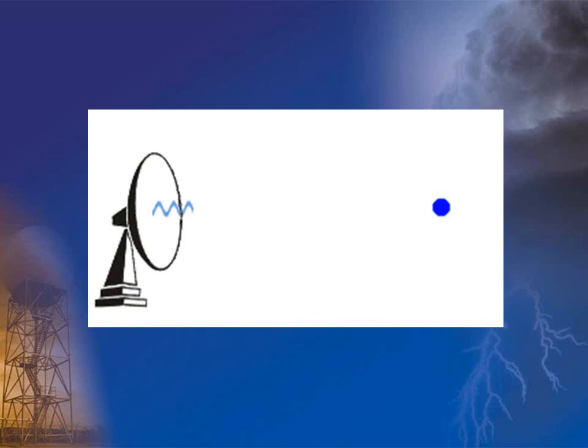The radar software also notes the direction the antenna was pointing when the signal was received back at the radar. By combining the direction the antenna was pointing with the distance away from the radar, the software is able to calculate the exact location of a target.